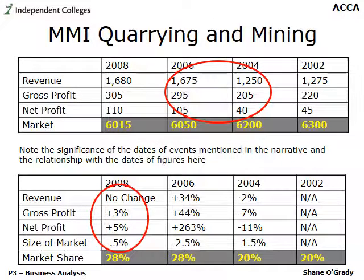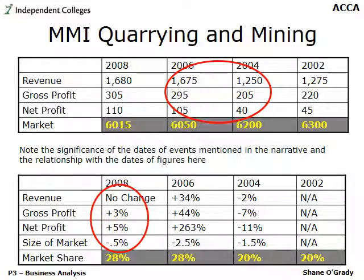MMI's market share of quarrying and mining is increasing — so on the Boston box X axis, they're on the left-hand side. But the market itself is shrinking — even if only by 1.5%, 2.5% and 0.5% — placing them at the bottom of the Y axis. Plotting left on X and bottom on Y: that's a cash cow. The case also explicitly states that cash from the quarrying business was used to purchase First Leisure, further confirming it was viewed as a cash cow.